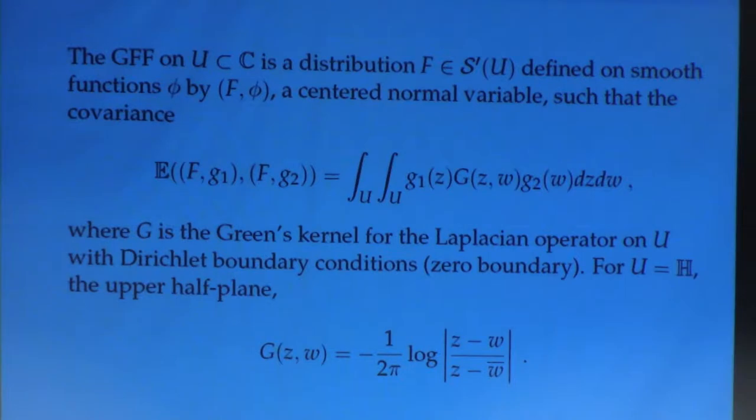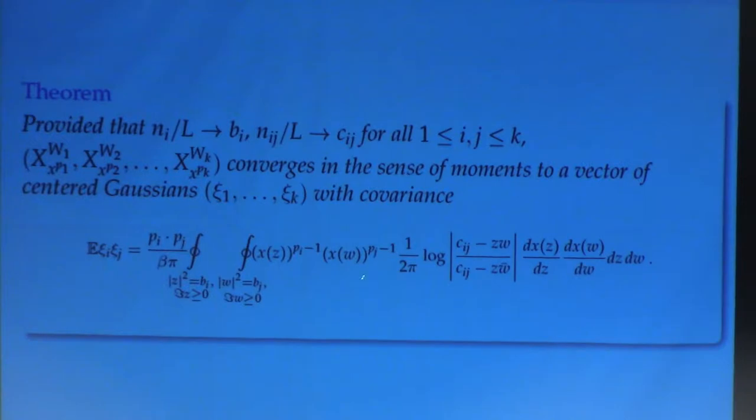And this covariance is going to be the integral over essentially u cross u for functions g1 and g2. It's going to be g1 of z, g2 of w times the Green's kernel on u for the Laplacian operator with Dirichlet boundary conditions. So, zero boundary. And in particular, for the upper half plane, this Green's kernel looks like this. So, this should ring some bells when you see something like that.